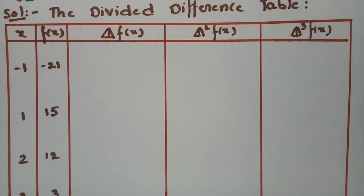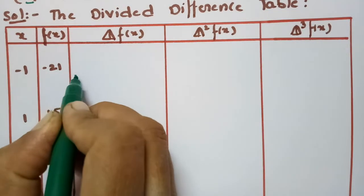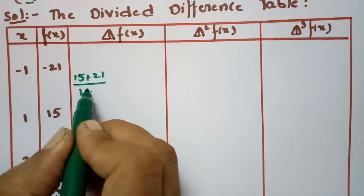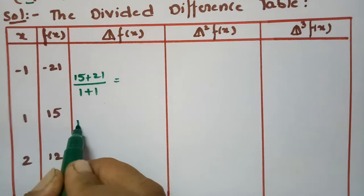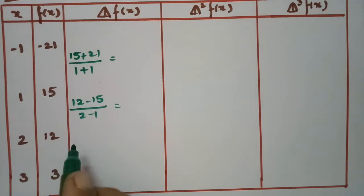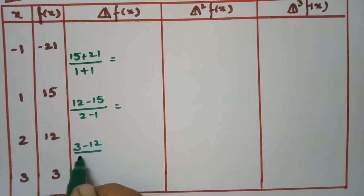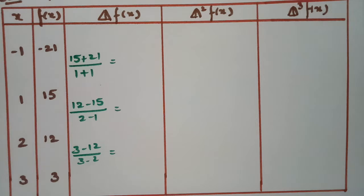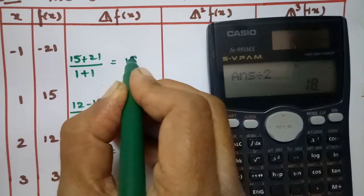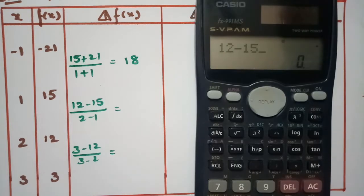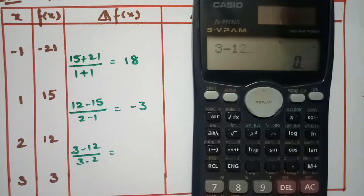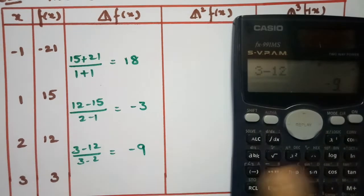We have to write the first differences. The first difference values are: (15 - (-21)) / (1 - (-1)) = 36/2 = 18; then (12 - 15) / (2 - 1) = -3/1 = -3; and (3 - 12) / (3 - 2) = -9/1 = -9.